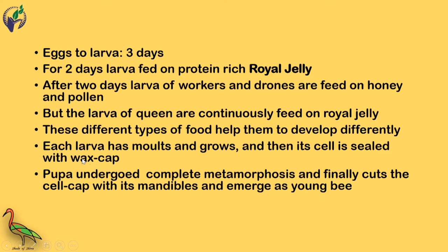Each larva molts — meaning it removes the old skin and emerges with new skin — then grows, and its cell is sealed with a wax cap by workers. The pupa undergoes complete metamorphosis and finally cuts the cell cap with its mandibles and emerges as a young bee. There are three possibilities: it emerges as a worker, drone, or new queen.